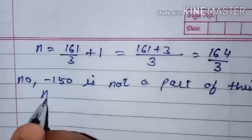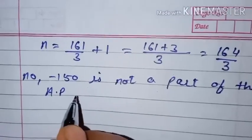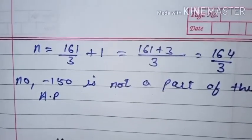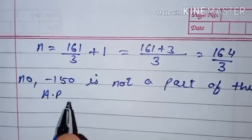Because the term number N is not a positive whole number, minus 150 is not a term of this AP.